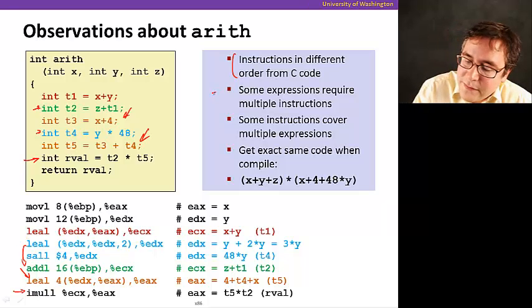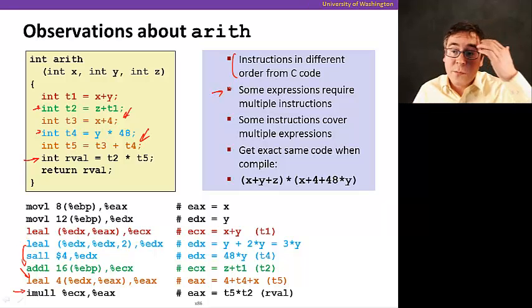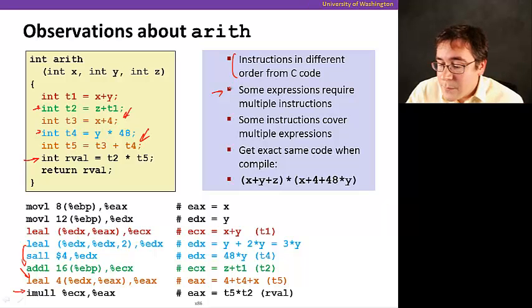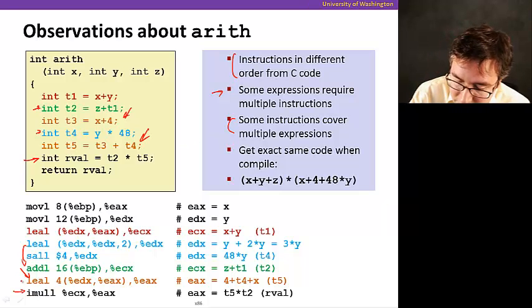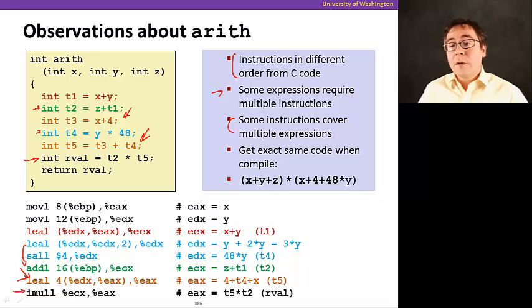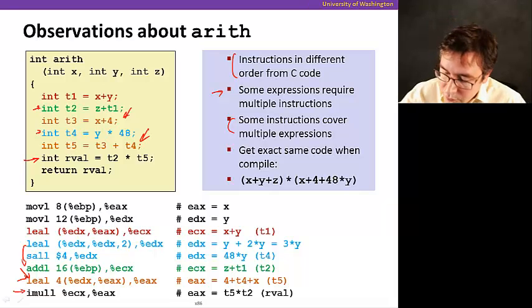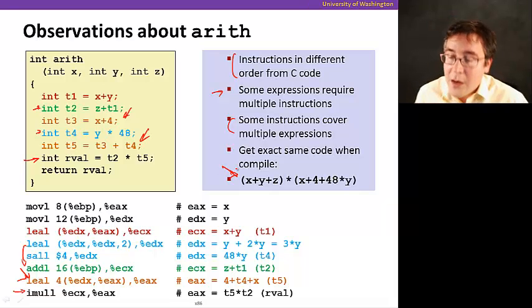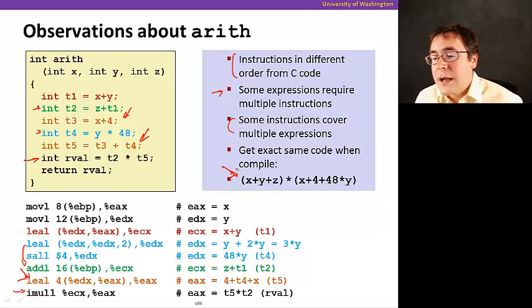And also, it's interesting to note that some expressions require multiple instructions. And some instructions, like this one that I just showed here, covers multiple expressions. And you get the same exact code when you compile this. Why is that? Because the compiler is going to have to create temporary variables anyways.